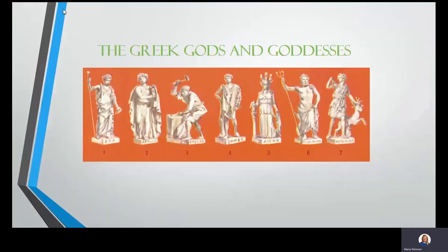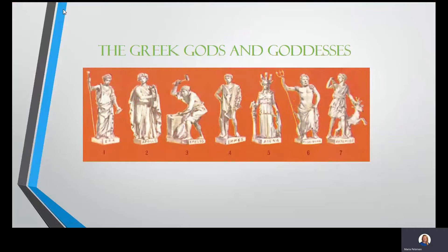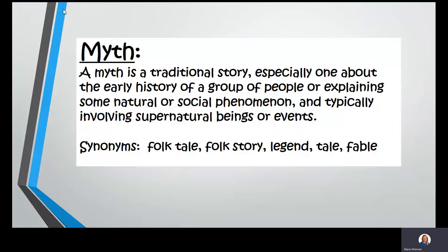We are going to talk about the Greek gods and goddesses called the Olympians. A myth — this was a spelling word in the past — is a traditional story, especially one about the early history of a group of people or explaining some natural or social phenomenon, and typically involving supernatural beings or events. Synonyms for myth include folk tale, folk story, legend, tale, or fable. We're going to talk more about fables a little bit later.